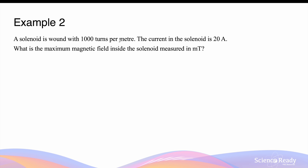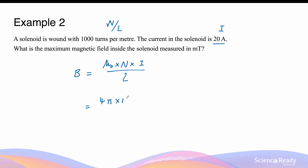A solenoid is wound with 1000 turns per meter, so N/L = 1000 turns per meter. The current in the solenoid is 20 amps. What is the maximum magnetic field inside the solenoid measured in milli-Teslas? For a solenoid, the magnetic field strength is given by B = μ₀ × N × I / L. μ₀ is 4π × 10⁻⁷, and N/L is 1000. Multiplying by 1000 and then by the current of 20 amps gives a magnetic field strength of 0.025 Tesla.